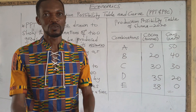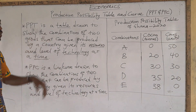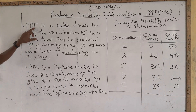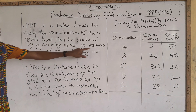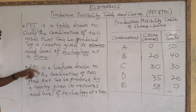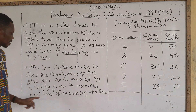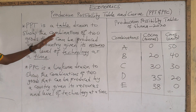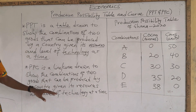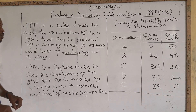Let's ask ourselves one or two questions to help explain the concept. What is a production possibility table? As you can see, it is already on the board. A production possibility table is a table drawn to show the combination of two goods that can be produced by a country given its resources and level of technology at a time. There is not much difference between the table and the curve, but when you are asked what is a production possibility table, make sure you talk about a table and not a curve. That is very important.